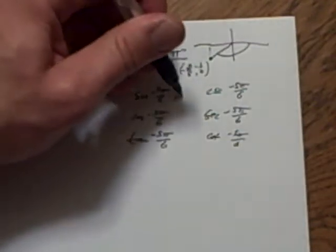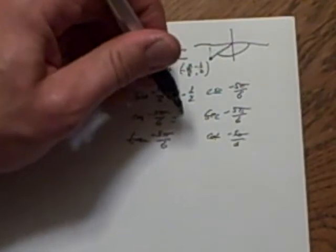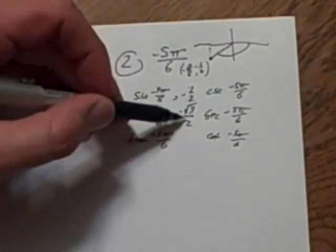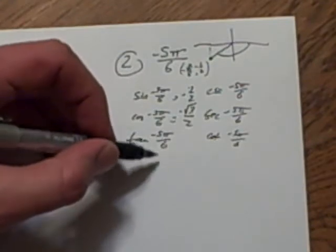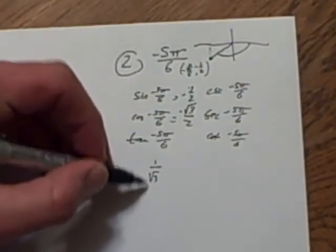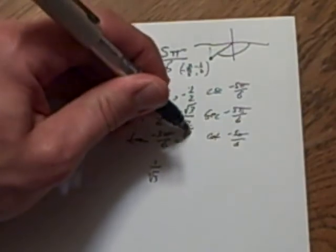So, sine of it would be negative 1 half. Cosine of it would be negative root 3 over 2. Tangent, this over this, it's basically 1 over square root of 3. Rationalize that denominator, so it's root 3 over 3.